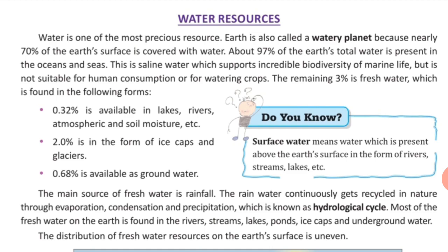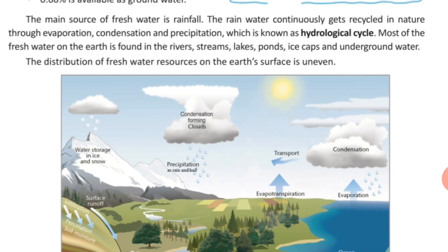Water is a renewable resource. It gets renewed through the water cycle, which is also called the hydrological cycle. Rainfall is the most important source of fresh water — you can say the main source of fresh water is rainfall. The hydrological cycle is the continuous process by which water is circulated throughout the earth and its atmosphere through evaporation, condensation, and precipitation.